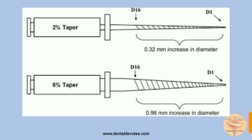For a size 30 file with 2% taper, D16 equals D0 plus 0.32 mm, that is 0.30 plus 0.32, which equals 0.62 mm. Now can you calculate how much the diameter D16 will be for a size 60 file with 6% taper? Leave your answer and explanation in the comments. Please give a thumbs up if you liked this video, and I'll see you in the next one!